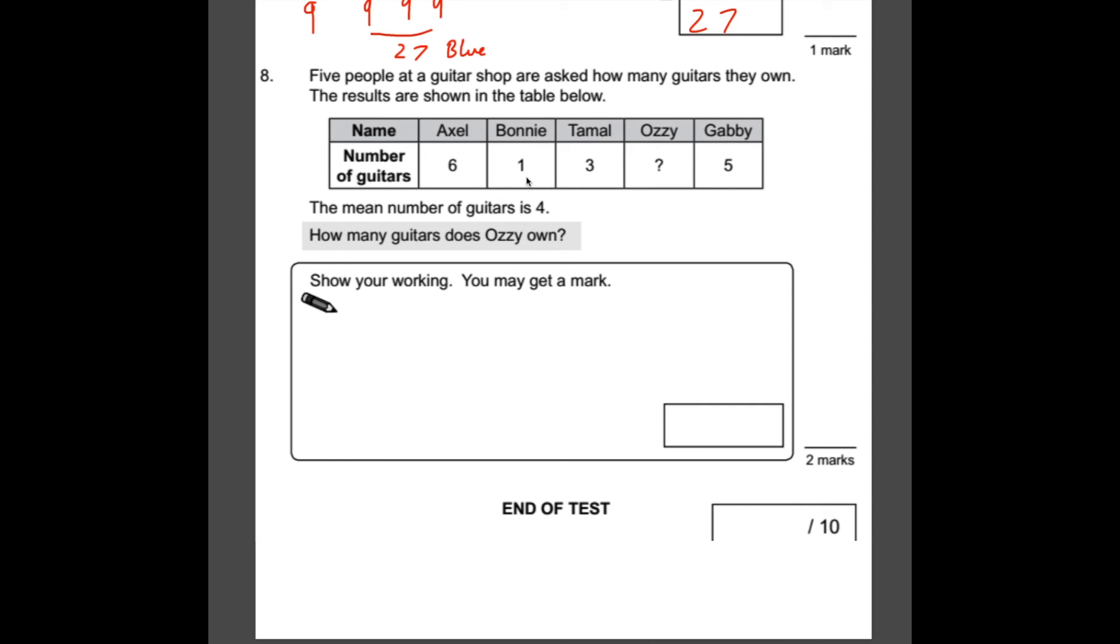So having a look here then, we have 6 plus 3 plus 1, which is 10, plus 5 for Gabby. So we have 15 in total. So we need Ozzy to have five guitars so there are 20 in total. And when we divide it by 5, the mean would be 4. So in this case, Ozzy has five guitars. However, we do need to show some working out. So what I would do is add up the total. 6 plus 1 plus 3 plus 5 equals 15. 20 divided by 5 equals 4. Underline 20. So we need five more. So Ozzy needs five. So the answer is five.